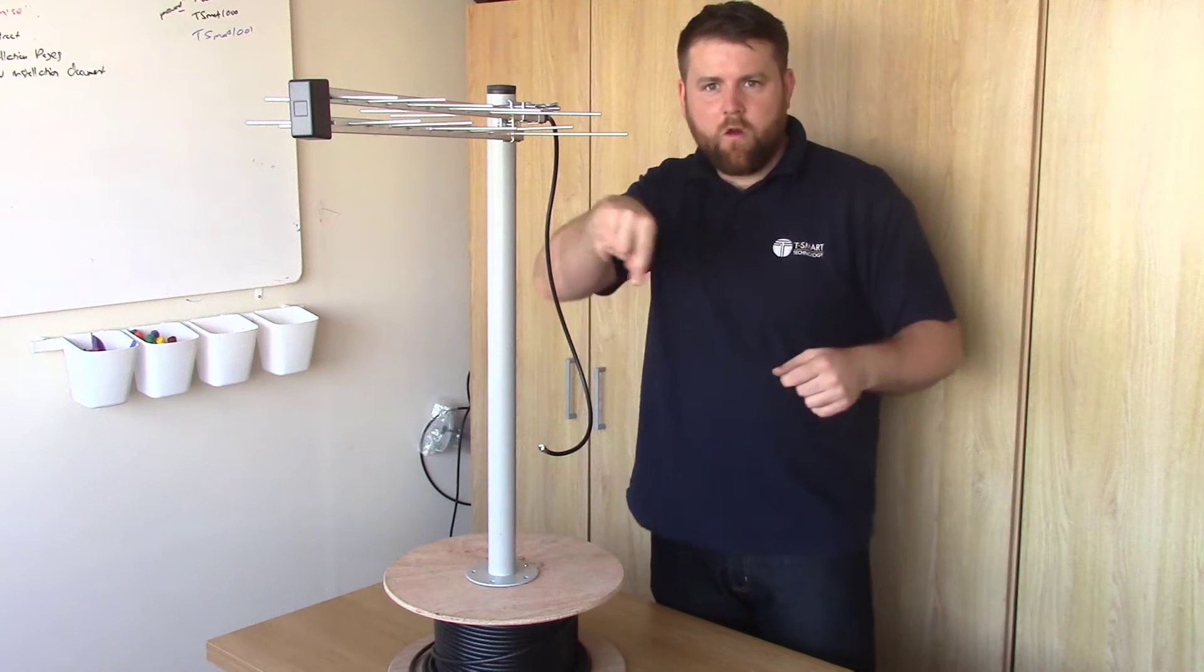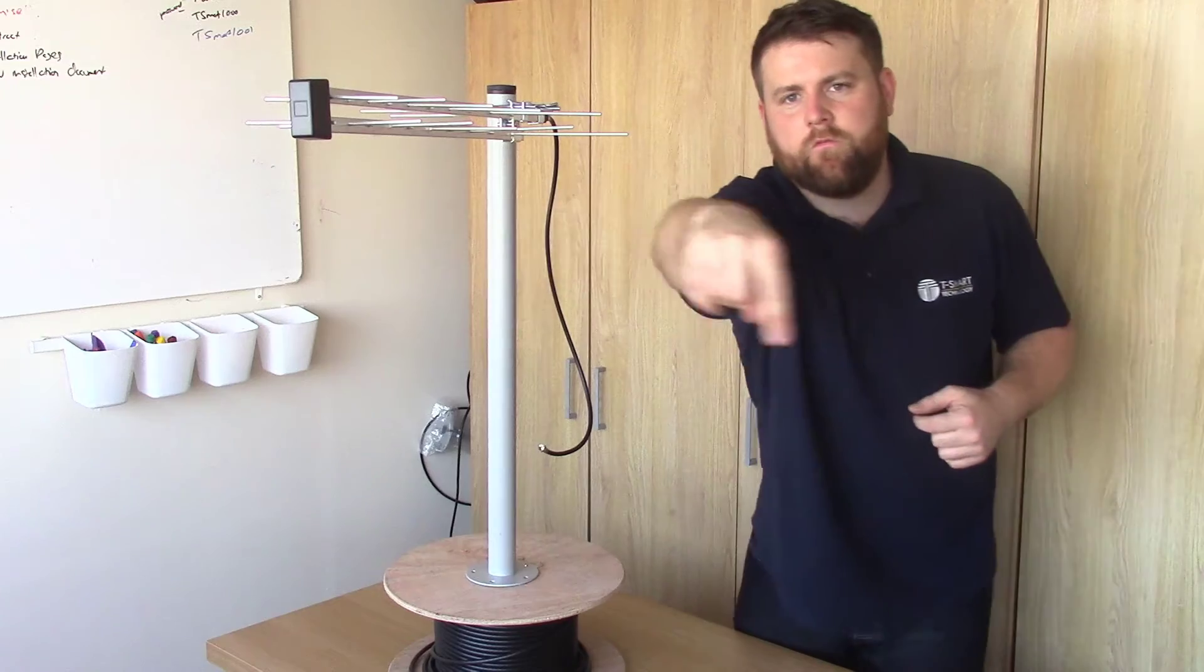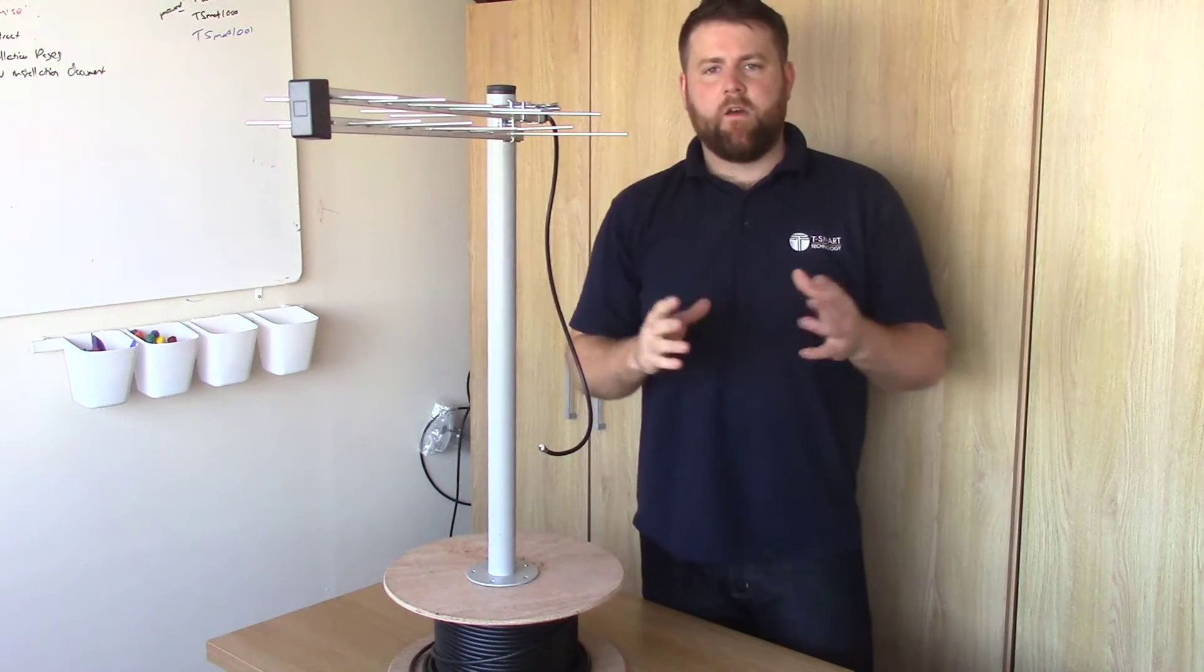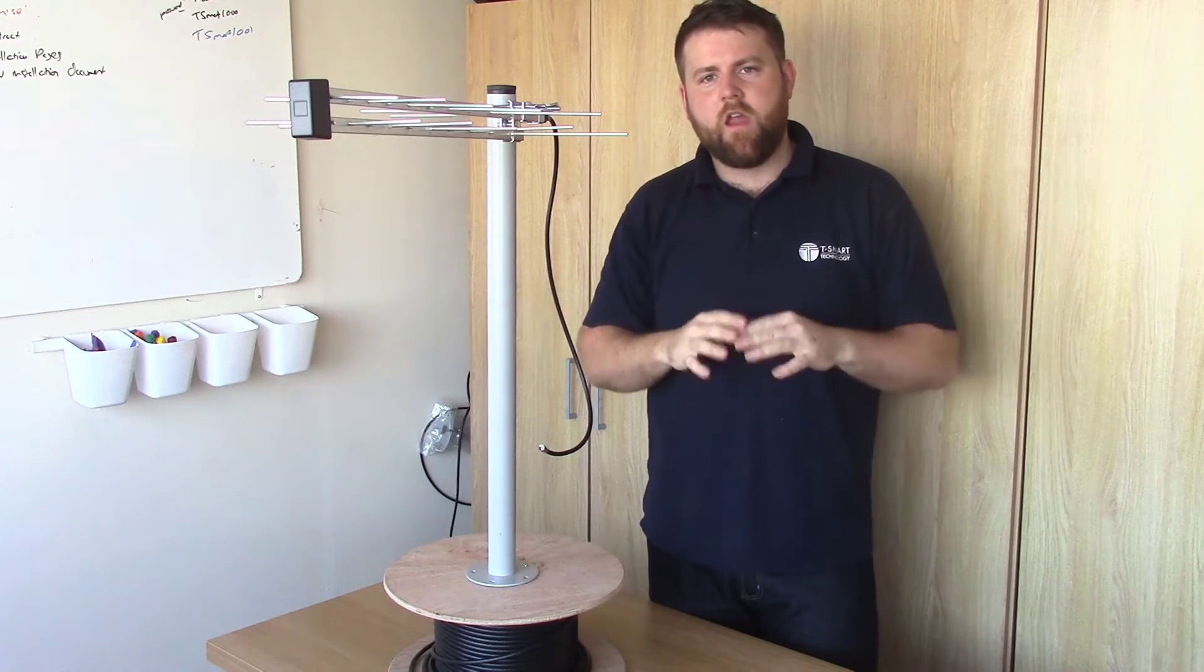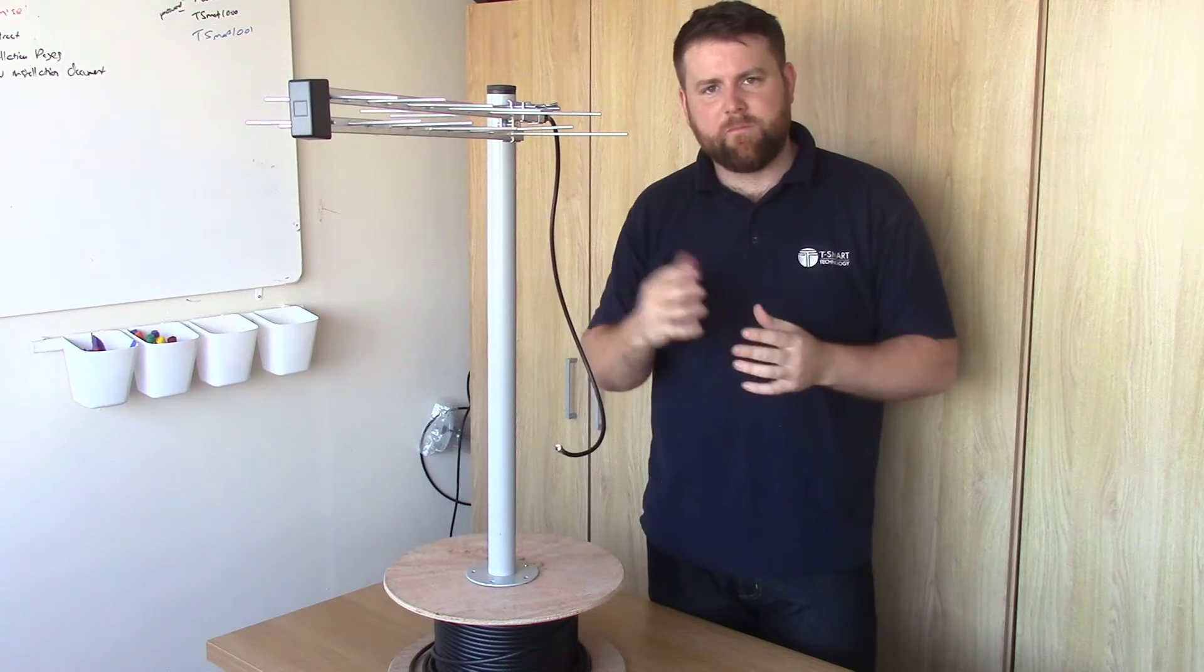And some transmitters will send it horizontally polarised, so the radio waves will travel through the air like that. Now they do that to stop them interfering with each other, and we have to adjust our aerial accordingly depending on what transmitter we're using.